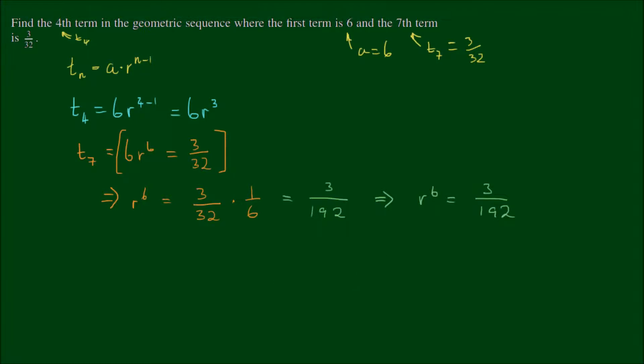So that means I've got r to the power of 6 equals 3 on 192. Let's write r to the power of 6 as r to the power of 3 all squared.